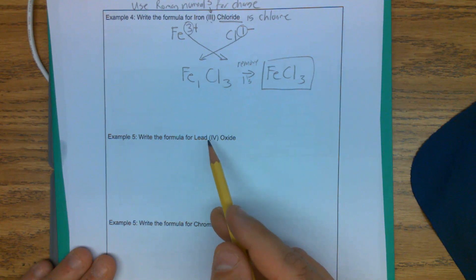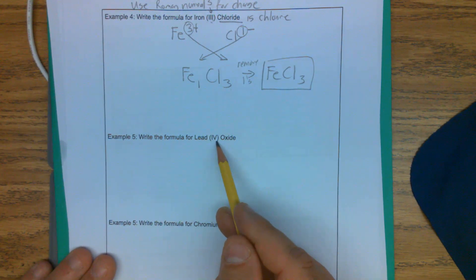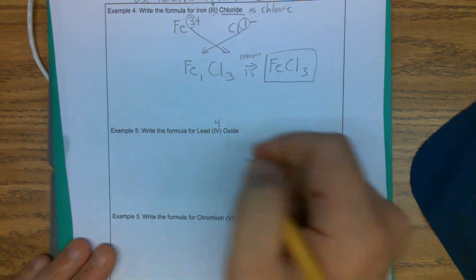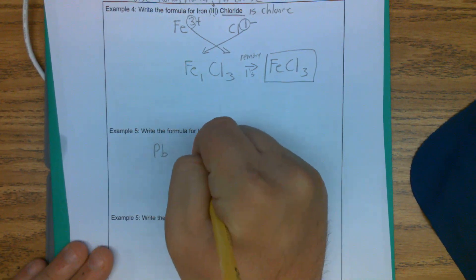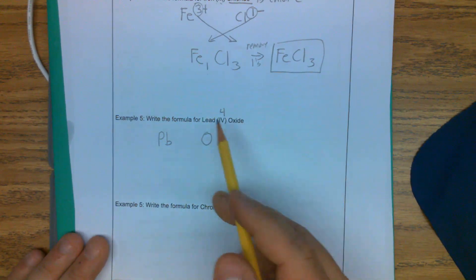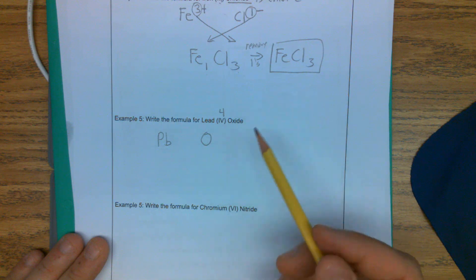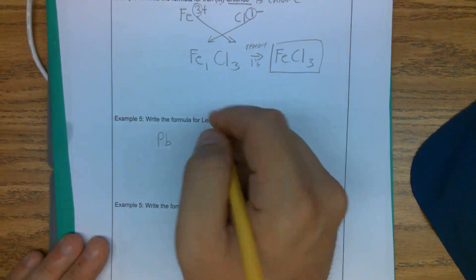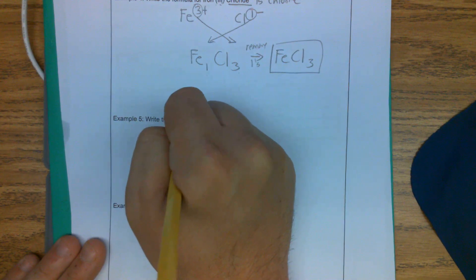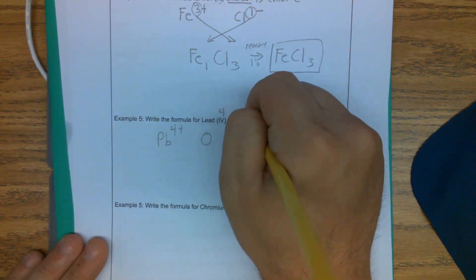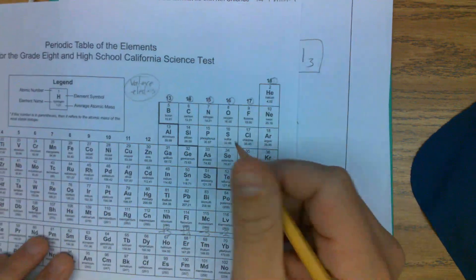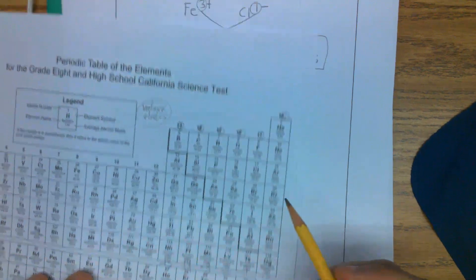Okay. Our next one that we're going to look at is lead four oxide. So define this one. We have lead four oxide. So the four is going to be our charge. Four plus. And oxide is oxygen. It's going to have a charge of minus two.